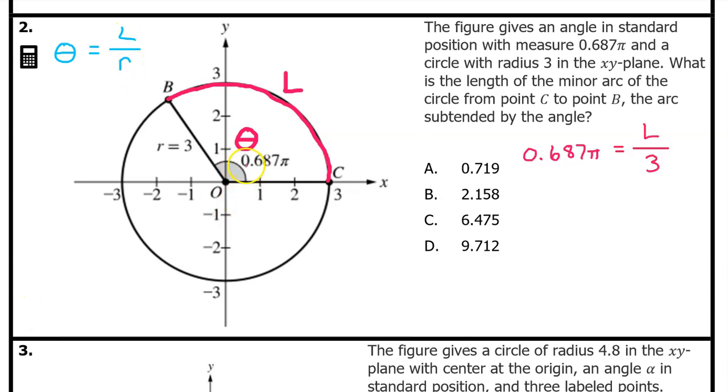The angle is 0.687π and the radius is 3. So this formula becomes 0.687π equals the arc length divided by 3. We can get the arc length by itself by multiplying both sides by 3. That leaves us with the arc length equal to 3 times 0.687π.